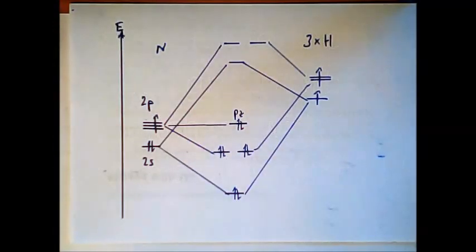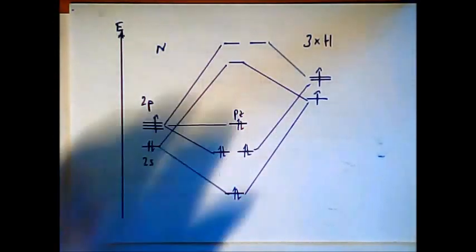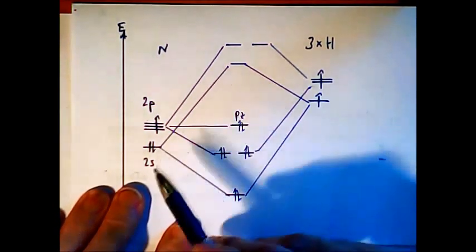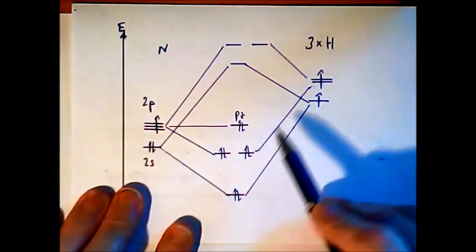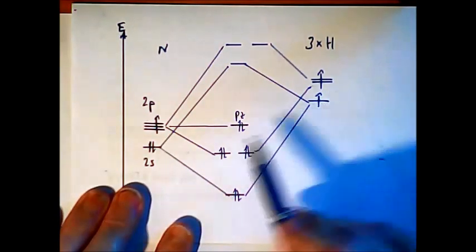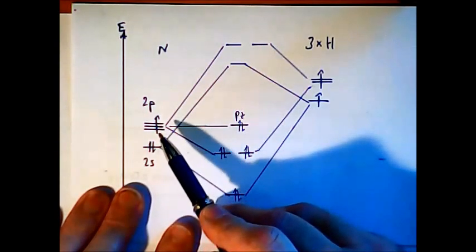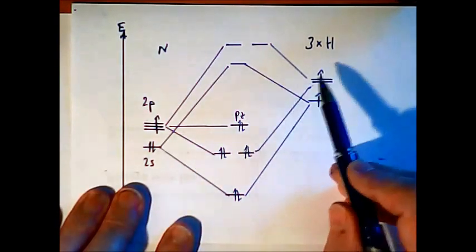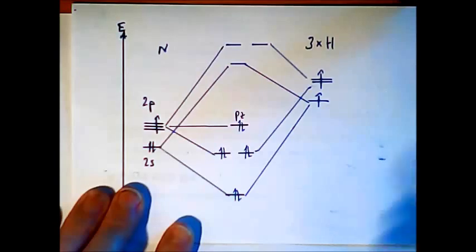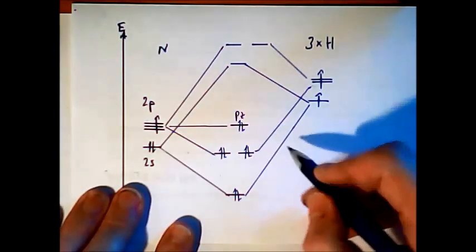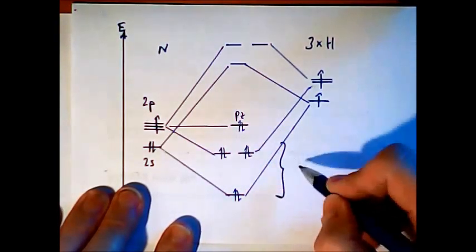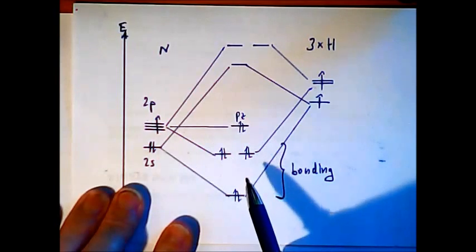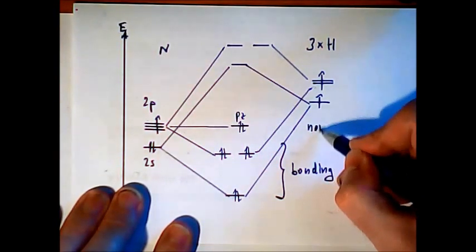So now look at our diagram of ammonia a little bit closer in detail. So I draw it again for you. We have the interaction between the 2s of nitrogen with this combination of hydrogen and px and py can interact with these two combinations. And the pz cannot interact with the hydrogen. So that means these three here orbitals we call bonding because they are lowered in energy. And this one is non-bonding.